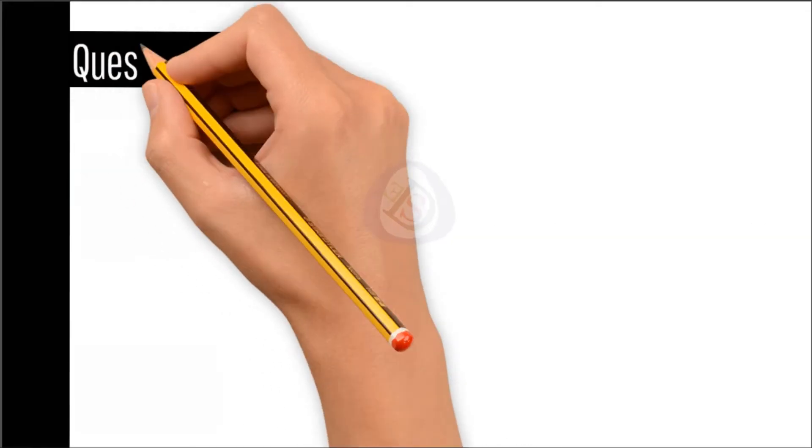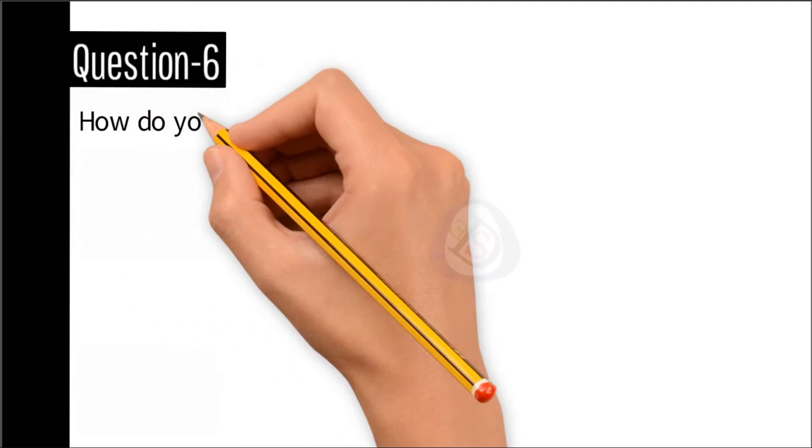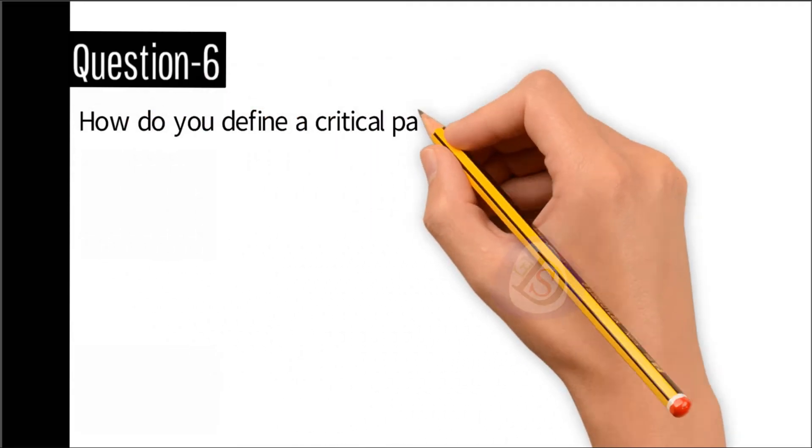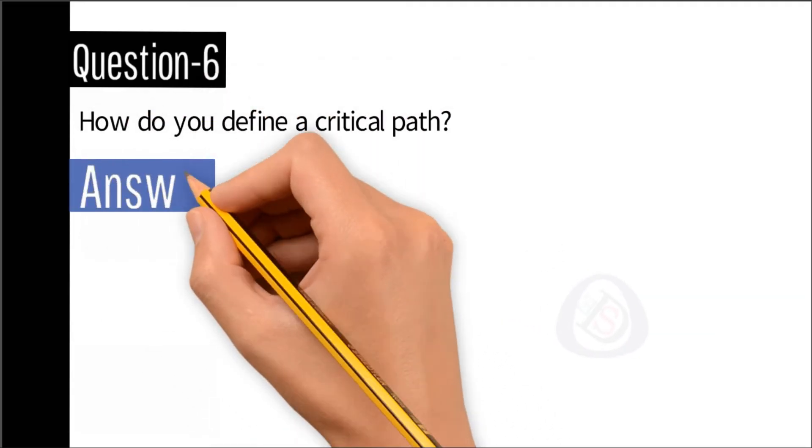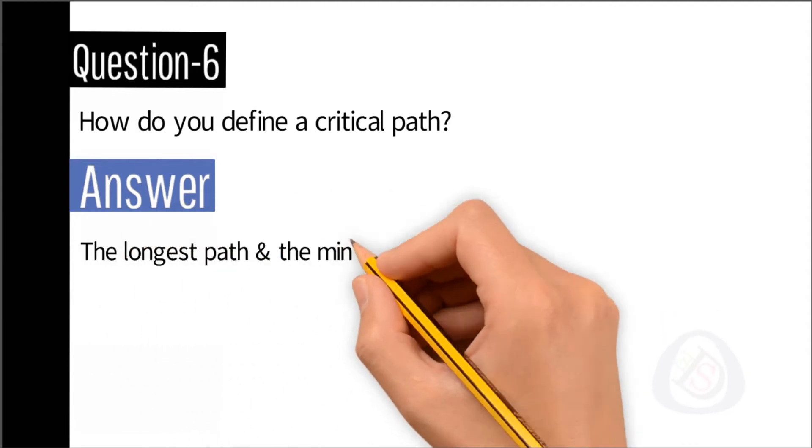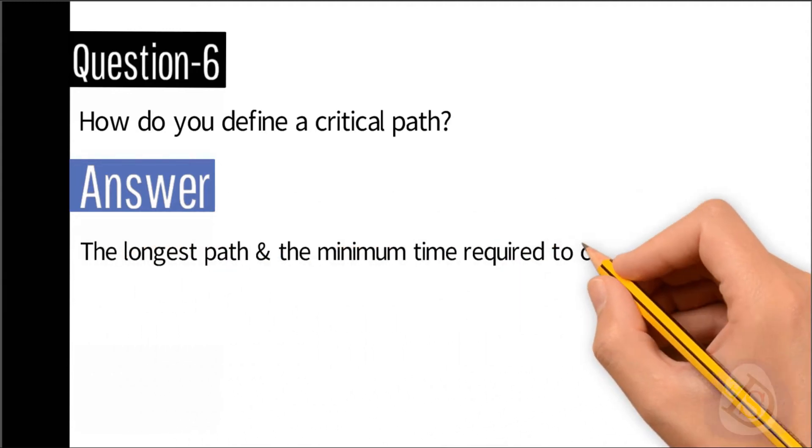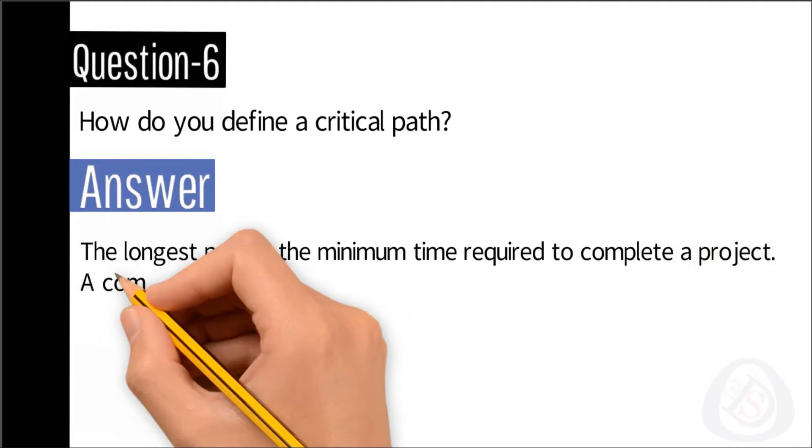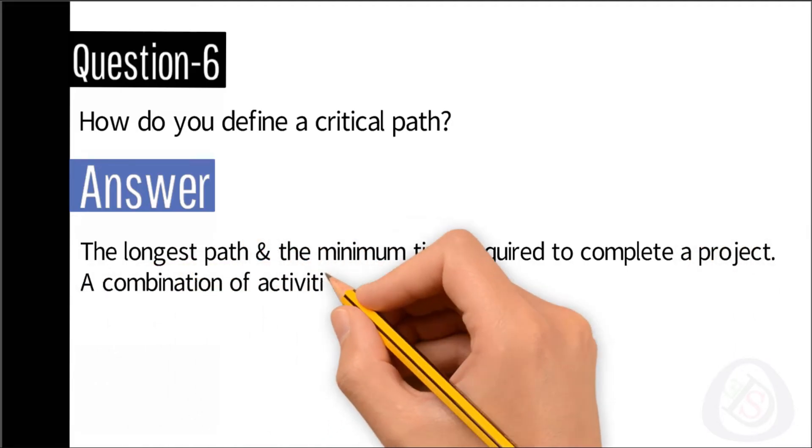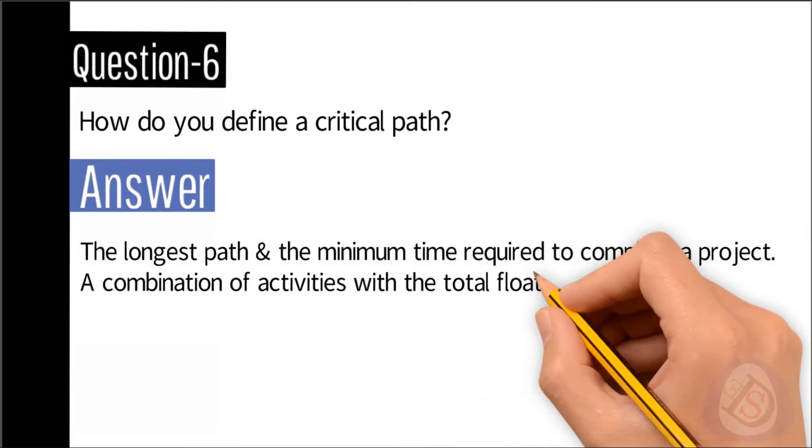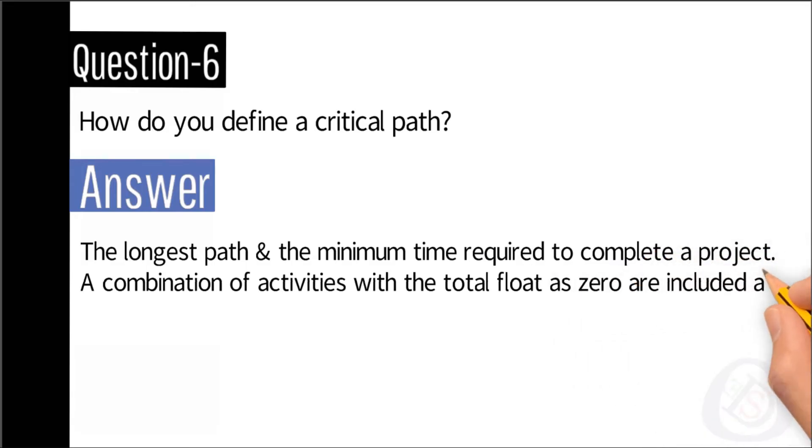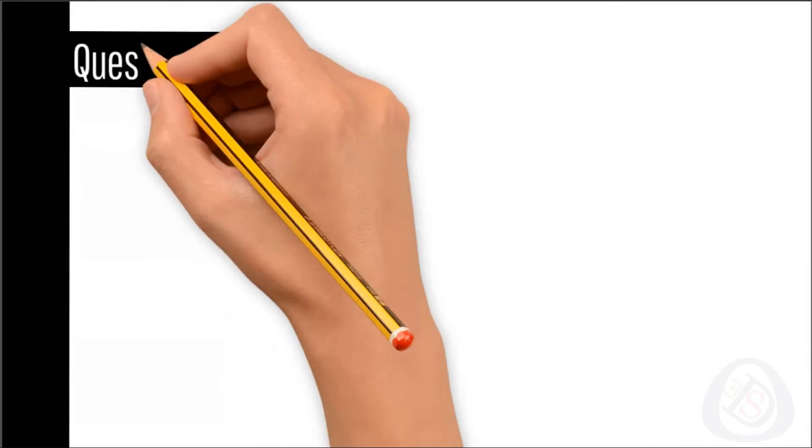Question number six: How do you define a critical path? Answer: The longest path and the minimum time required to complete a project. A combination of activities with the total float as zero are included.